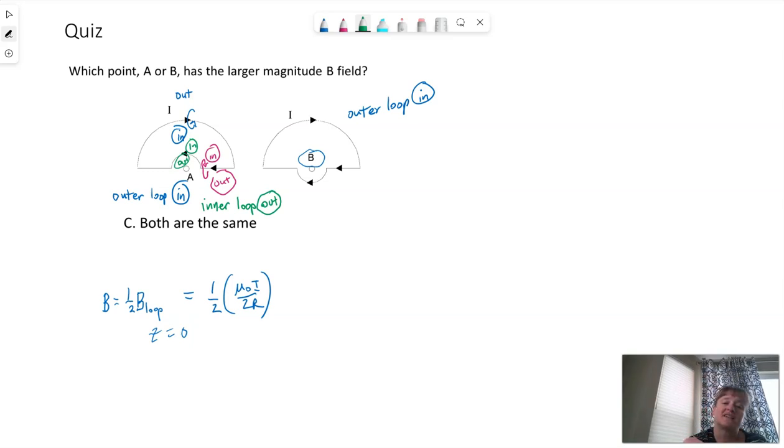So if we were to calculate the total magnetic field at A, we would need to vectorally add some magnetic field that's pointing into the screen and some that is pointing out. They're in opposite directions, so some of them will cancel out. We'll get a magnitude that is smaller than either one.